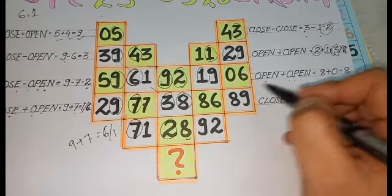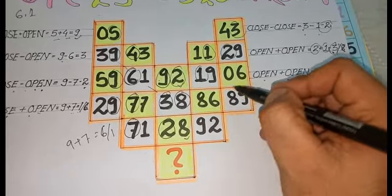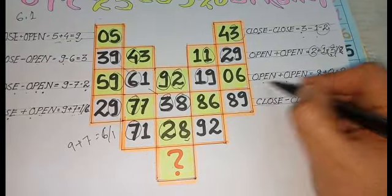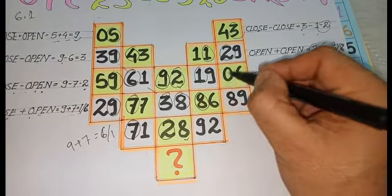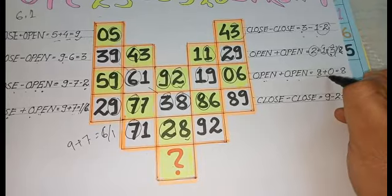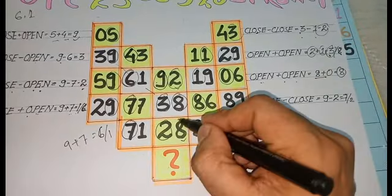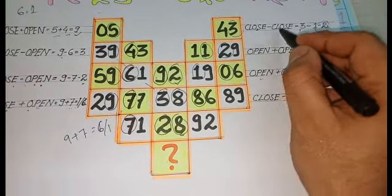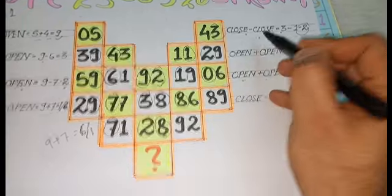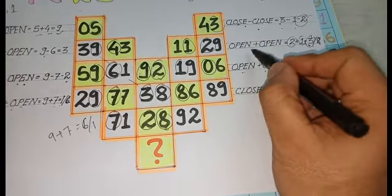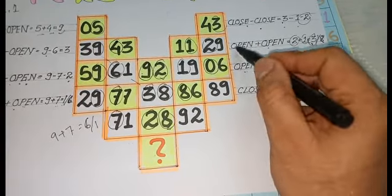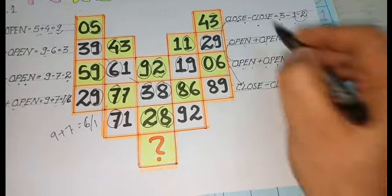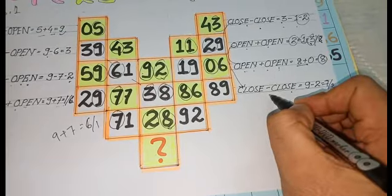Close plus close. Open plus open. Open 8, 0, 8, 8. Same logic. Close minus close. Open plus open. Close, close, close.